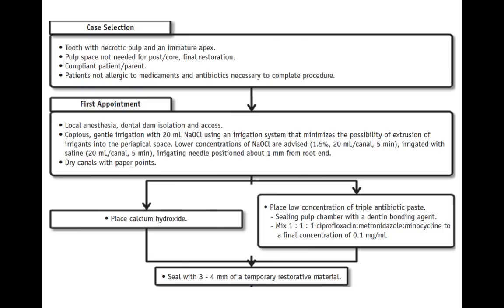In the first appointment: give local anesthesia, apply rubber dam, open access, irrigate and remove the necrotic pulp using 20 ml of NaOCl at 1.5% per canal for five minutes. Once done, dry with paper points, then place either calcium hydroxide or a low concentration of triple antibiotic paste — a 1:1:1 ratio of ciprofloxacin, metronidazole, and minocycline at a concentration of 0.1 mg/ml. Minocycline, being a tetracycline, causes discoloration of teeth.